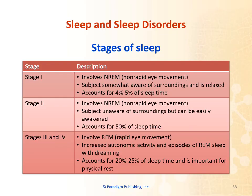There are different stages of sleep. The first stage involves non-rapid eye movement, or NREM. The subject is somewhat aware of surroundings and is relaxed, accounting for four to five percent of sleep time. Stage two involves NREM as well; the subject is unaware of the surroundings but can easily be awakened, accounting for 50 percent of sleep time. Stages three and four involve REM, or rapid eye movement, with increased autonomic activity and episodes of dreaming. It accounts for 20 to 25 percent of sleep time and is important for physical rest.